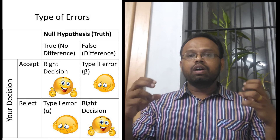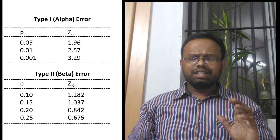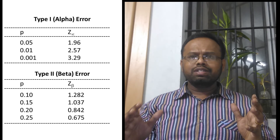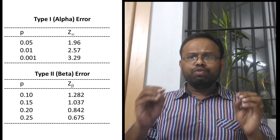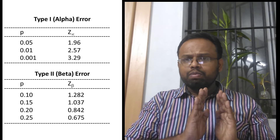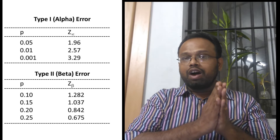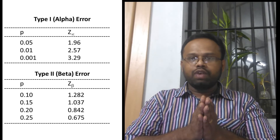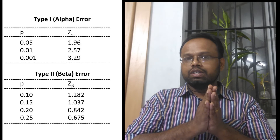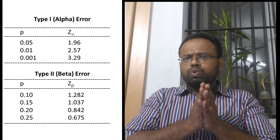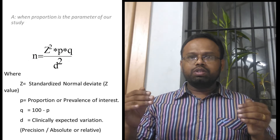Here is a table where you can see the z values corresponding to particular alpha and beta errors. For a particular alpha error or beta error, there is a constant z value which we substitute into the formula. This is called the standardized normal deviate. We are not going to go into detail on these. Now coming back to the original formula.